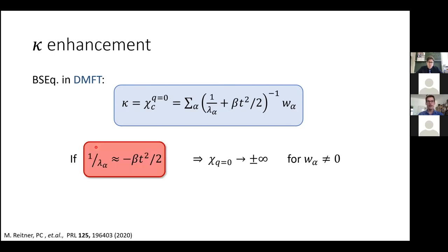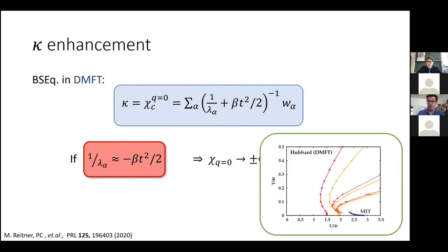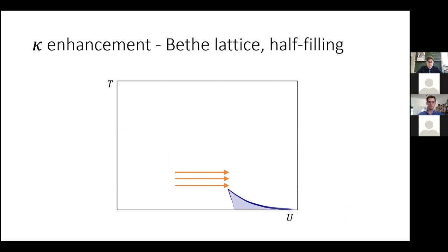More specifically, if one over lambda is negative enough to reach this condition, we would trigger a divergence in the compressibility — but only if the weight is nonzero. At this point, it's instructive to step back: I showed you results for kappa with one enhancement, and Alessandro showed phase diagrams for vertex divergences with infinitely many divergence lines. There seems to be a mismatch — there are infinitely many eigenvalues, yet we do not see oscillatory behavior of the compressibility. To resolve this we need to perform a calculation.